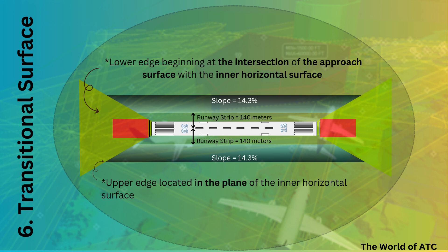Overall, the transitional surface has a slope of 14.3%, which means it would coincide with the inner horizontal surface after a length of approximately 320 meters.